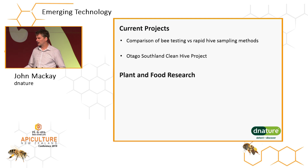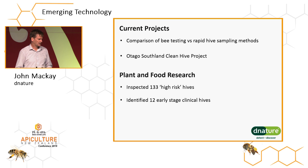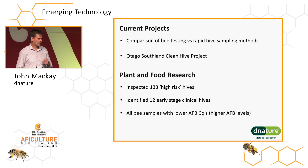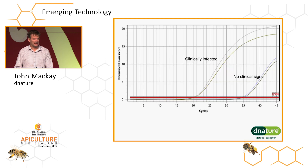We're not the only ones working on this qPCR technology. Plant and Food Research looked at 133 high-risk hives and identified from clinical inspection 12 early-stage clinical hives. All those bee samples by qPCR showed lower AFB CQs — that is, they had higher levels, as you'd expect. That work was by James Sainsbury and team at Plant and Food. But they had another 12 that had low-level DNA detection but no clinical signs. Our project is ongoing to follow these hives and explore the difference between clinically infected and hives with no clinical signs but where we're still detecting AFB spores.